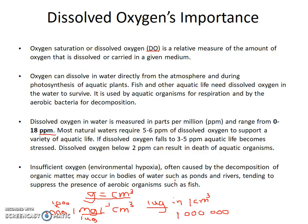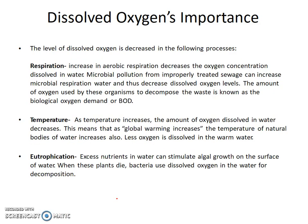More importantly, a DO range of 3 to 5 ppm — equivalently 3 to 5 mg/L — is fine for aquatic life. But if you go below 2 ppm, or 2 mg/L, it can actually result in the death of organisms. Insufficient oxygen, called hypoxia, can result from decomposition of organic matter, because decomposition is a form of respiration and it consumes oxygen. Factors that decrease oxygen content include: respiration, temperature increase, and eutrophication.